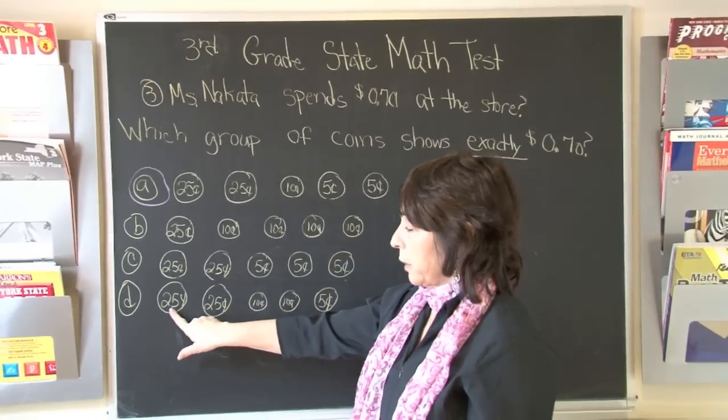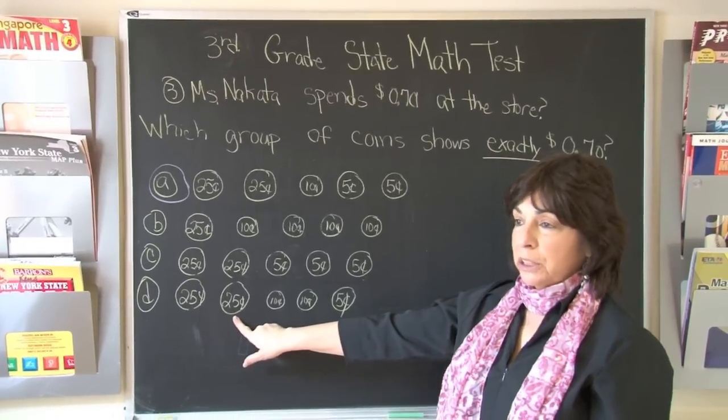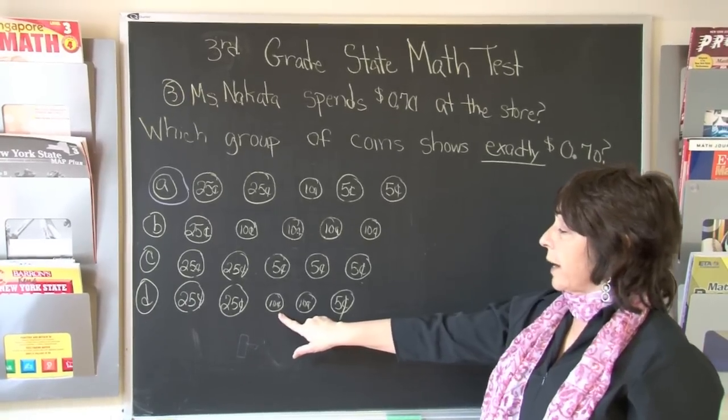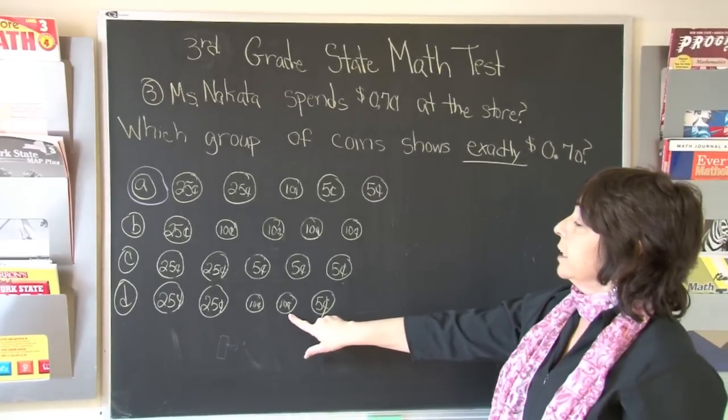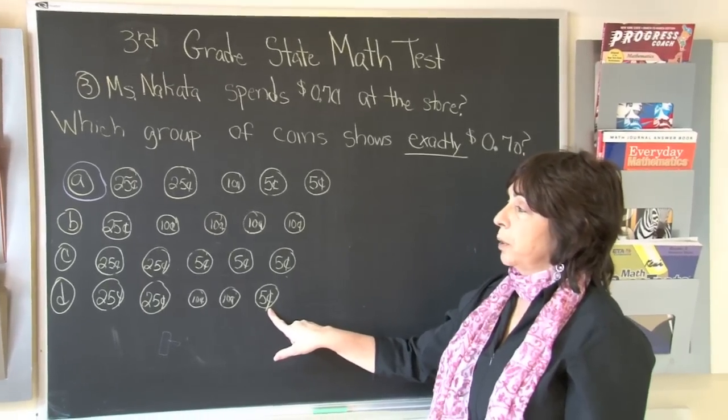And D was 25 cents plus 25 cents, which is 50. Plus 10 cents is 60. Plus another dime is 70. Plus a nickel is 75. So that is actually too much.